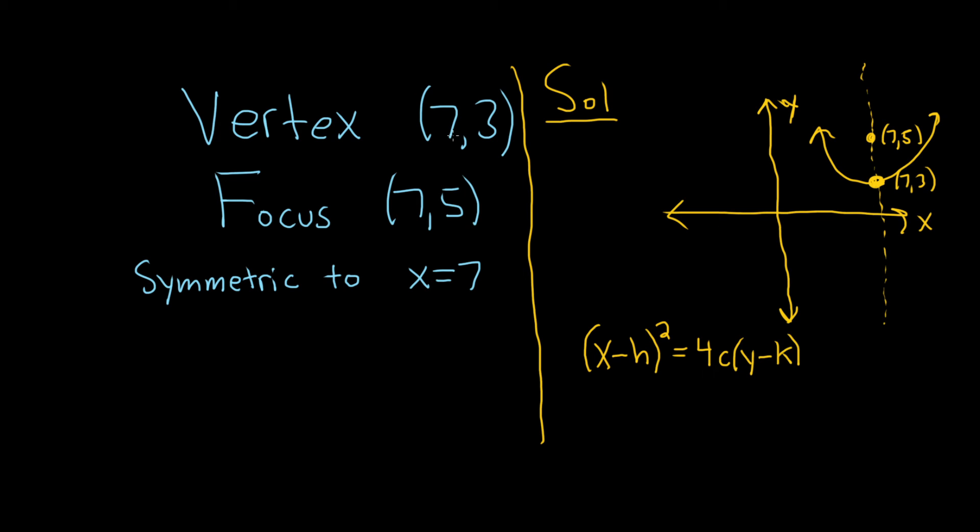We have our vertex (h,k), so h is 7 and k is 3. So this will be (x minus 7) squared equals 4c times (y minus 3).